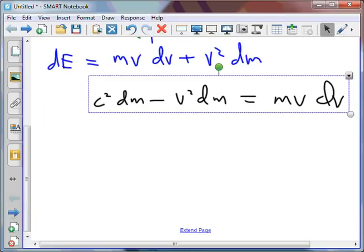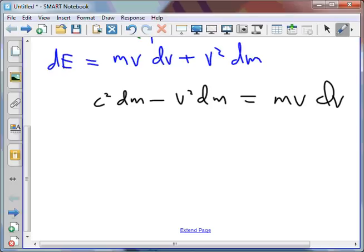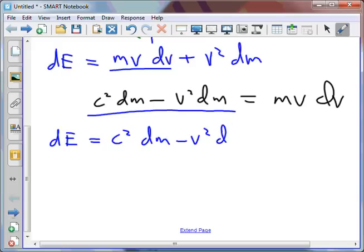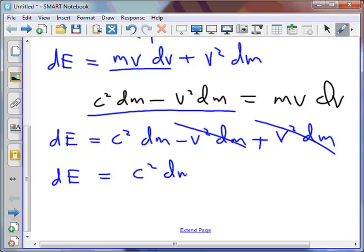And so also I could replace this with all of this to give me dE equals c squared dm minus v squared dm plus v squared dm. Now these two quantities will cancel out. I end up with dE is equal to c squared dm.